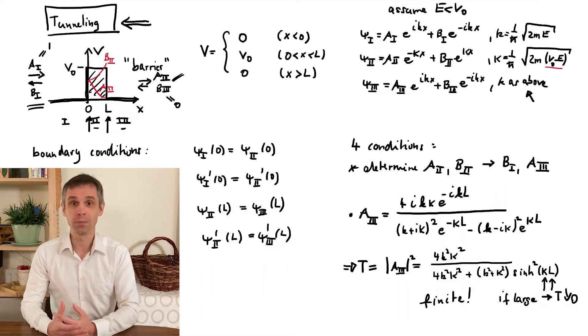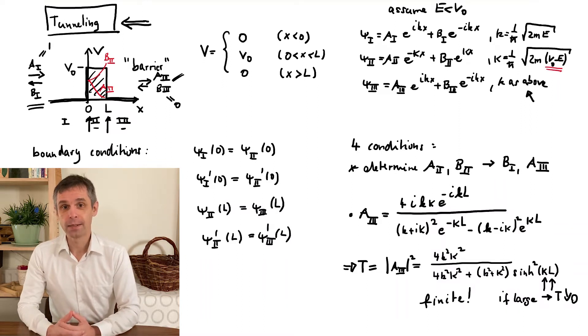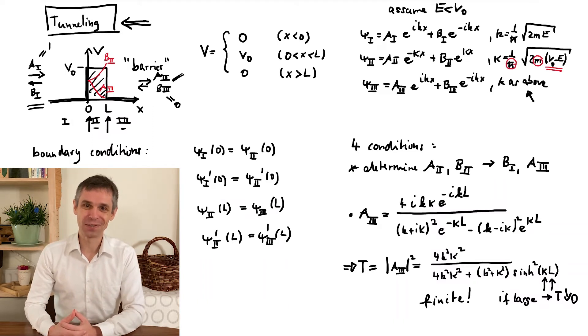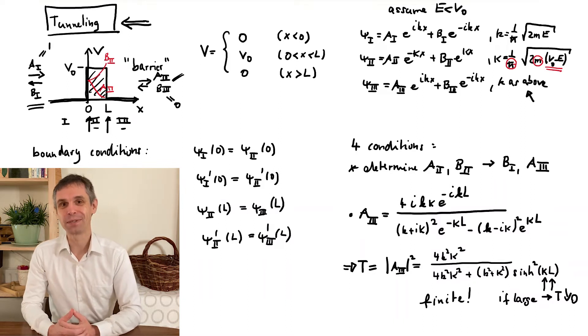And when you look at the expression for kappa, you also see that the barrier should not be too high, and the particle not too massive. And all of this is in relation to Planck's constant, which is a really small number in terms of normal quantities encountered in macroscopic contexts.